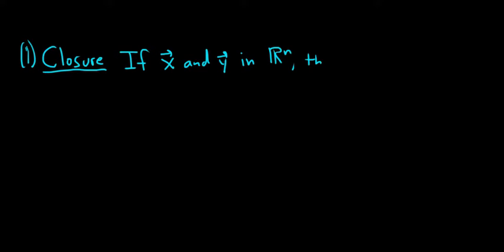The first one, we'll call 1, is the closure property. This says if you have two vectors in Rn, then the sum is in Rn, so it's pretty simple. If you have x and y in Rn, then the vector x plus y is in Rn. Instead of saying in, I'm going to use this notation here. This means is in or belongs to the set Rn. Remember, to add vectors, you simply add the components.